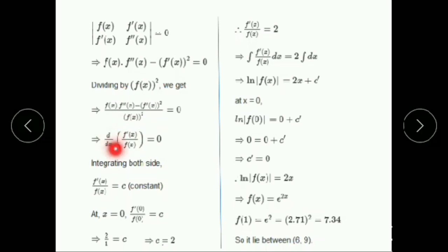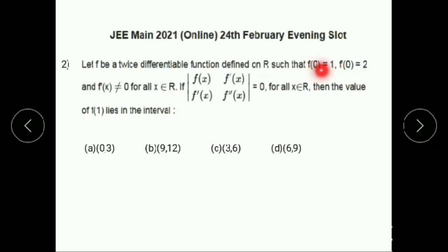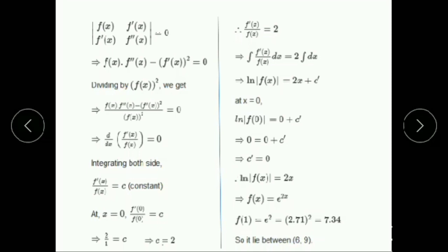This is in the form of d/dx [f'(x)/f(x)] = 0 for all x. Integrating both sides, we get f'(x)/f(x) = constant c. To find c, at x = 0: f'(0)/f(0) = c. Given f(0) = 1 and f'(0) = 2, substituting these values gives c = 2. Therefore, f'(x)/f(x) = 2.